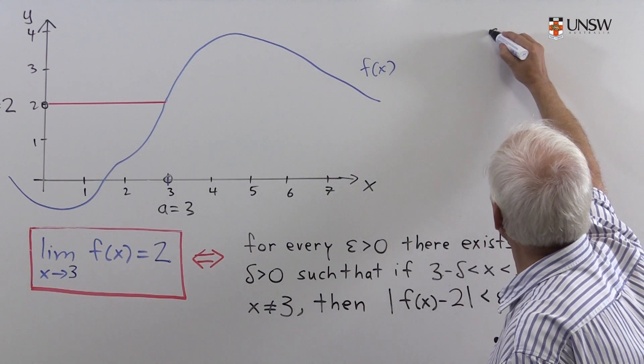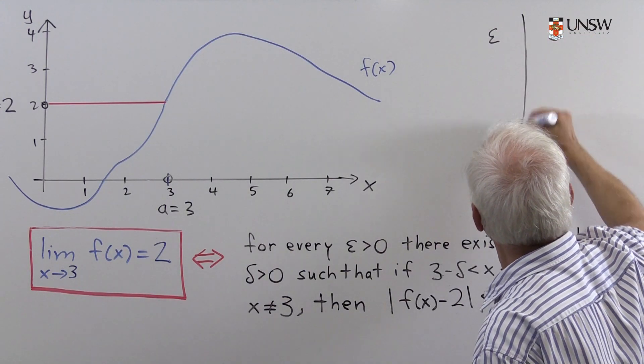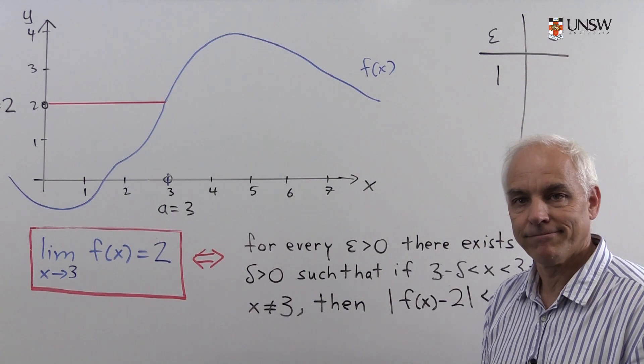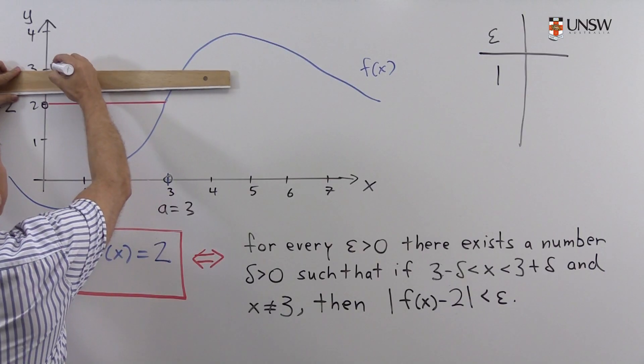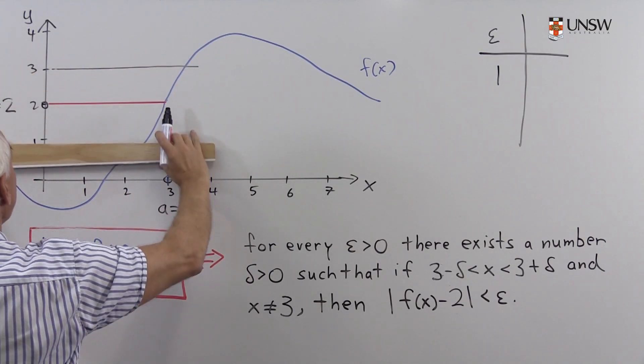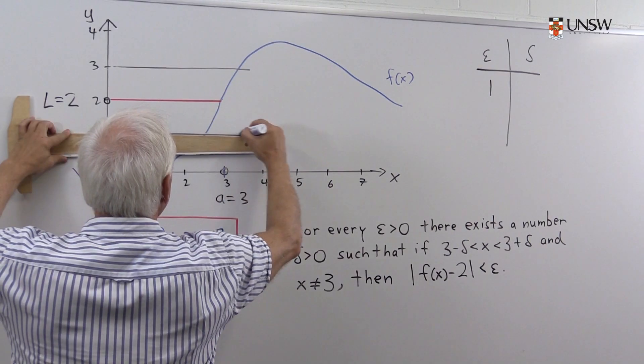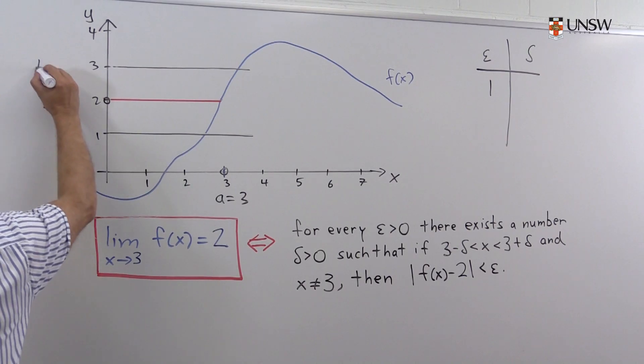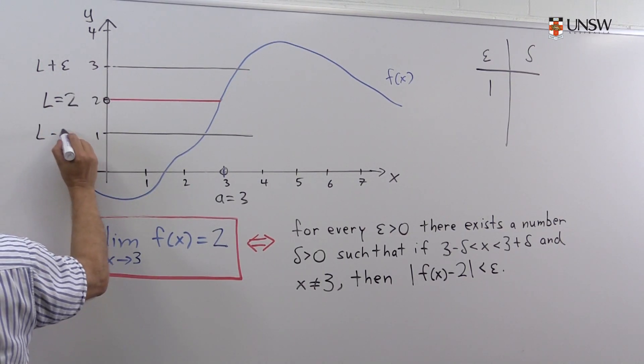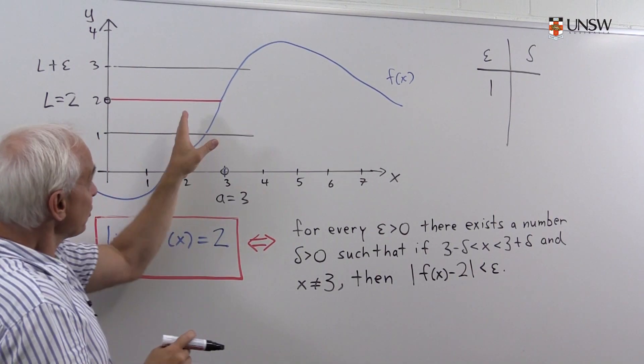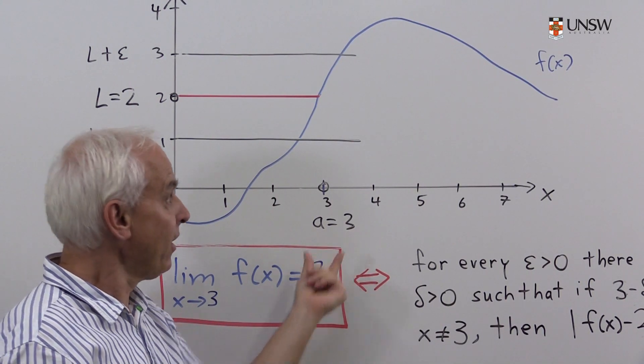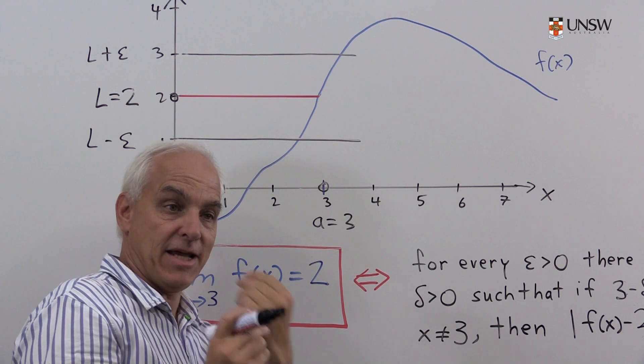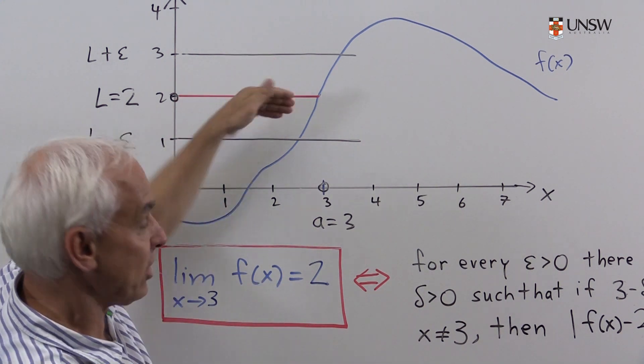Let's choose, say, epsilon to be equal to 1. So what would that mean? That means we're going to look at a band here of width on either side 1. So this is now L plus epsilon, and this is L minus epsilon. We want to ensure that the function is somewhere in this band as x approaches or is near 3. So how close to 3 do we have to insist that x is to ensure that the function's values are in this band?